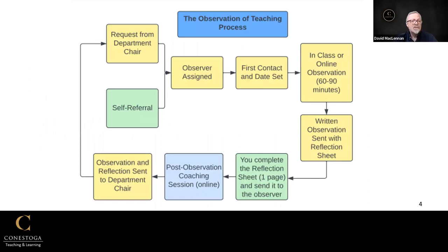Let's have a look at the process. All of the things that are in yellow are things that are done for you. The things that are in green are things that you do. What is in blue is what we do together. We get the request either from you or your department chair, an observer is assigned, and we make contact and set a date.